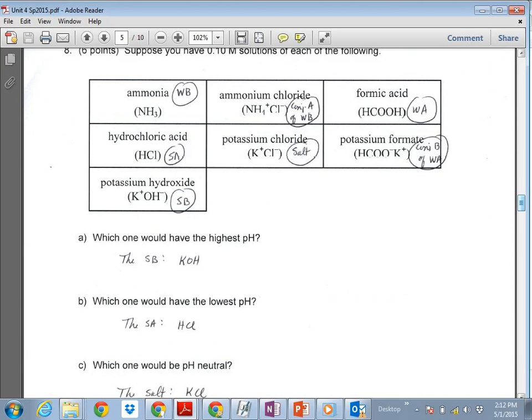So you can kind of see what I suggested, and I saw a lot of you do this, kind of identify what these are and then answer the question. So ammonia is a weak base. Ammonium chloride, the NH4+, is a conjugate acid of a weak base. Formic acid, weak acid. HCl, strong acid. KCl is just a salt. Potassium formate, the formate ion actually is the conjugate base of a weak acid. And sodium, potassium hydroxide, excuse me, is a strong base.